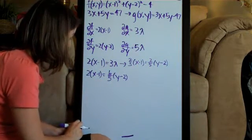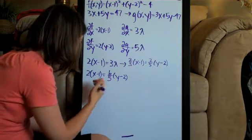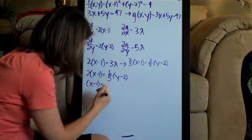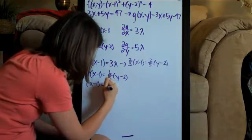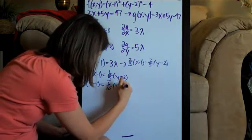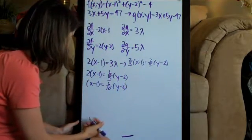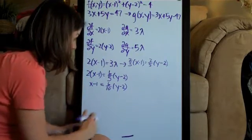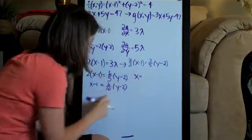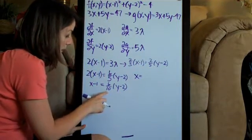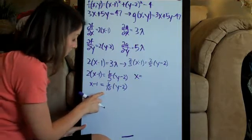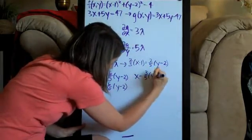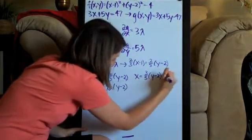Now we will divide both sides by 2 and we will get x minus 1 equals 6 tenths times y minus 2. And now we can get rid of these parentheses. We'll just add 1. We can also reduce this 6 tenths because both are even numbers. That actually reduces to 3 fifths times y minus 2, and then we're adding 1 to both sides.